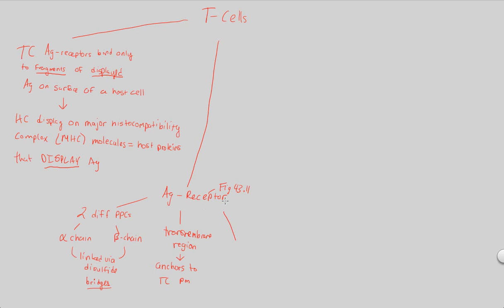There must also be specific recognition that occurs at the antigen receptor of a T-cell. That specificity is going to be inherent to the variable region. There's also a variable region on T-cell antigen receptors at the tips of the chains that constitute the T-cell antigen receptor. This is where we have the antigen binding site. A key difference between B and T cells: there's only one antigen binding site here, not two. The T-cell antigen receptor has one tip, meaning a single antigen binding site.